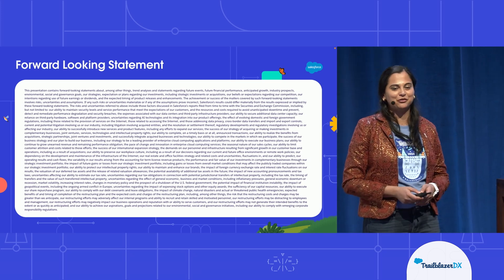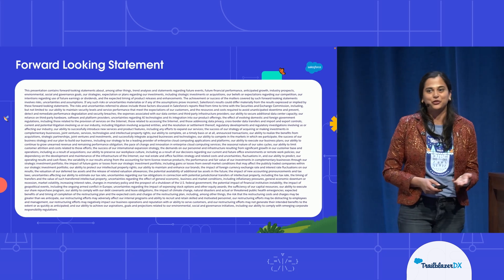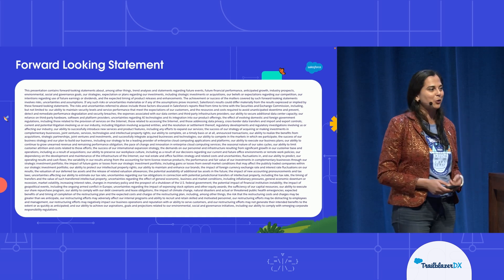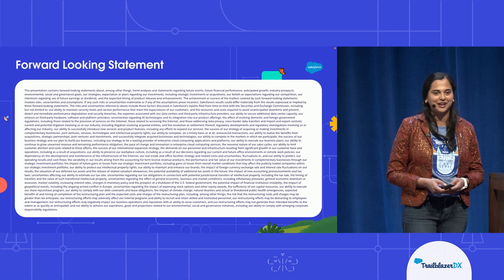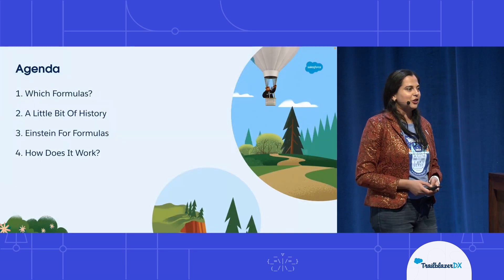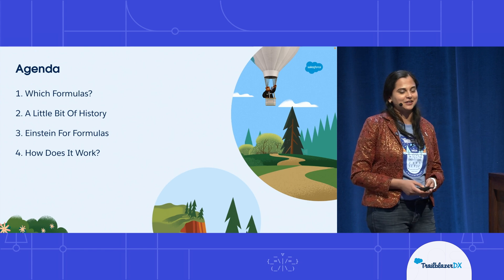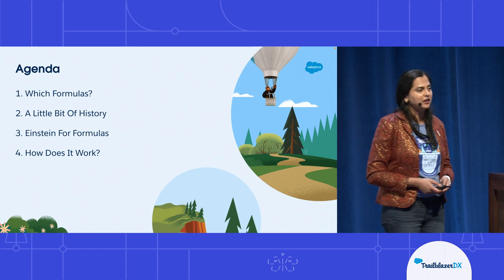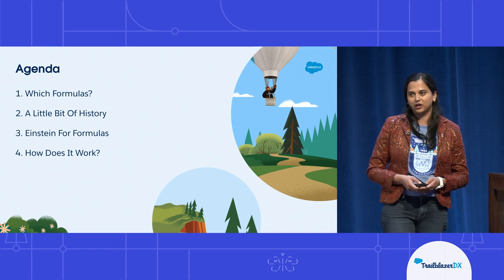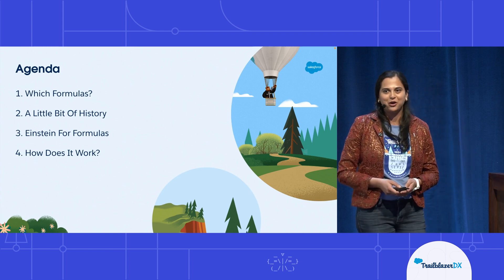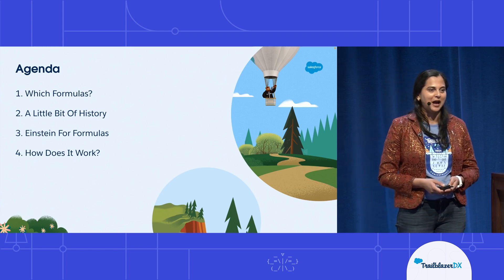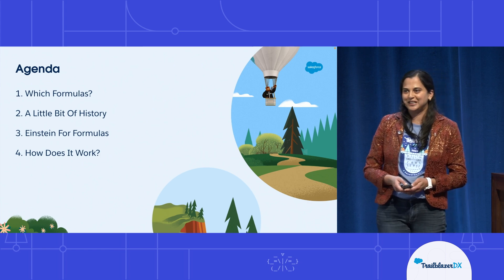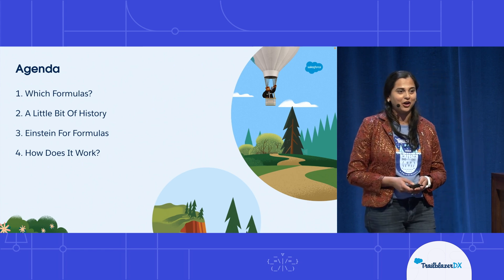First, I want to talk about the forward-looking statement. We're going to be talking about future-facing things, so please do make your purchasing decisions on what's already out there. The agenda today is about formulas and how we can make it easier for you using AI. I'll start off with talking about what formulas I'm referring to when I talk about making it easier for you.